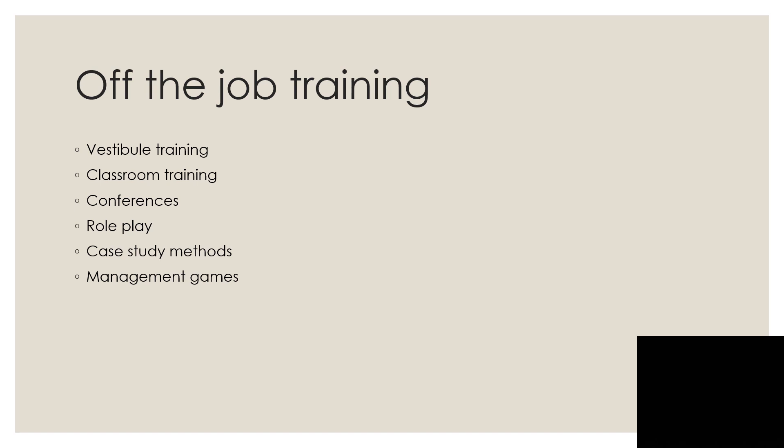Now, these are some of the off-the-job training methods. The first is vestibule training. In this method, a training center — known as the vestibule training center — is set up in which actual job conditions are duplicated. The equipment and materials used in training are similar to those the trainees will use in their actual job environment. Expert trainers are employed to provide training using equipment identical to that at the workplace. This method is primarily used when a large number of employees must be trained quickly due to expansion of business activities.